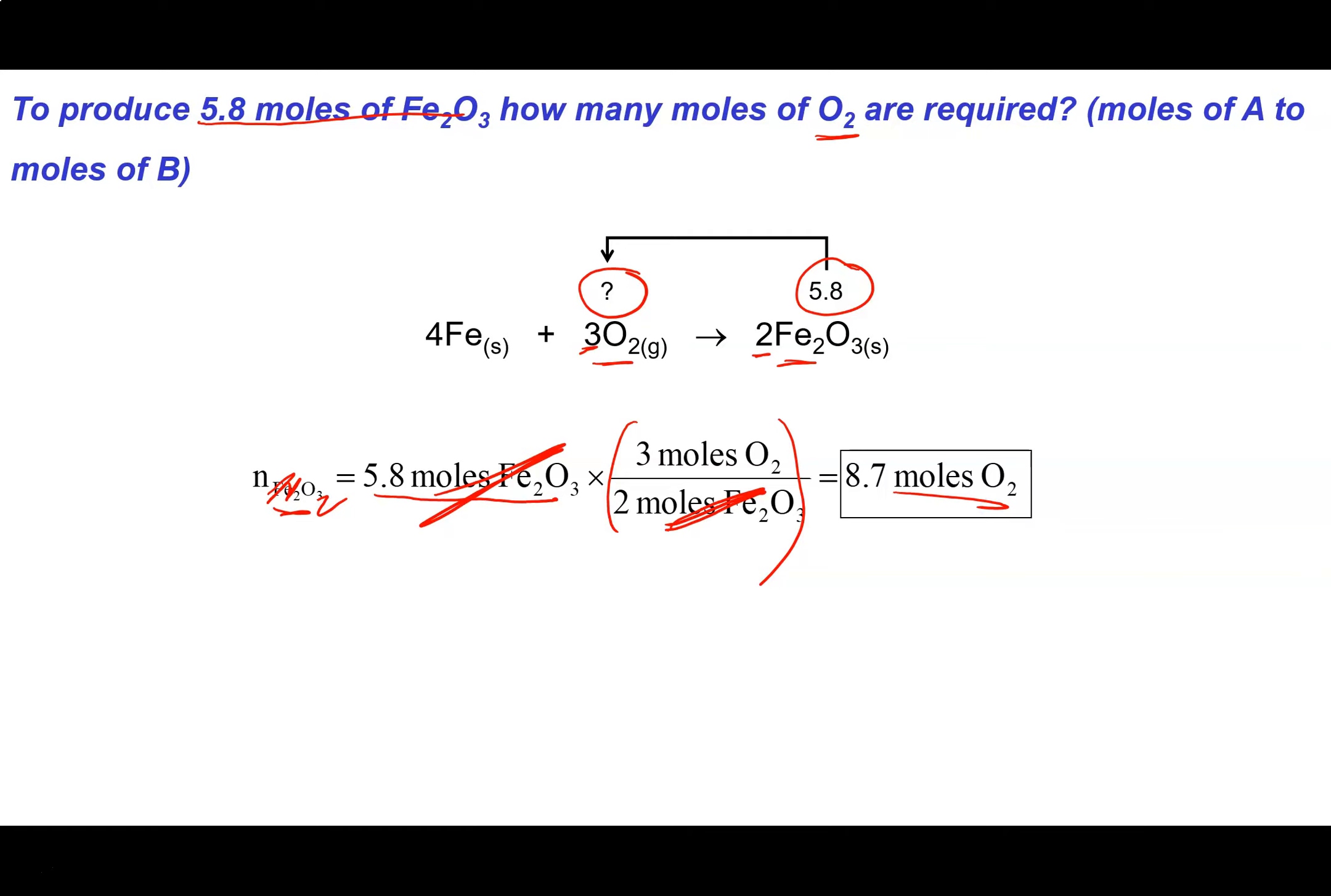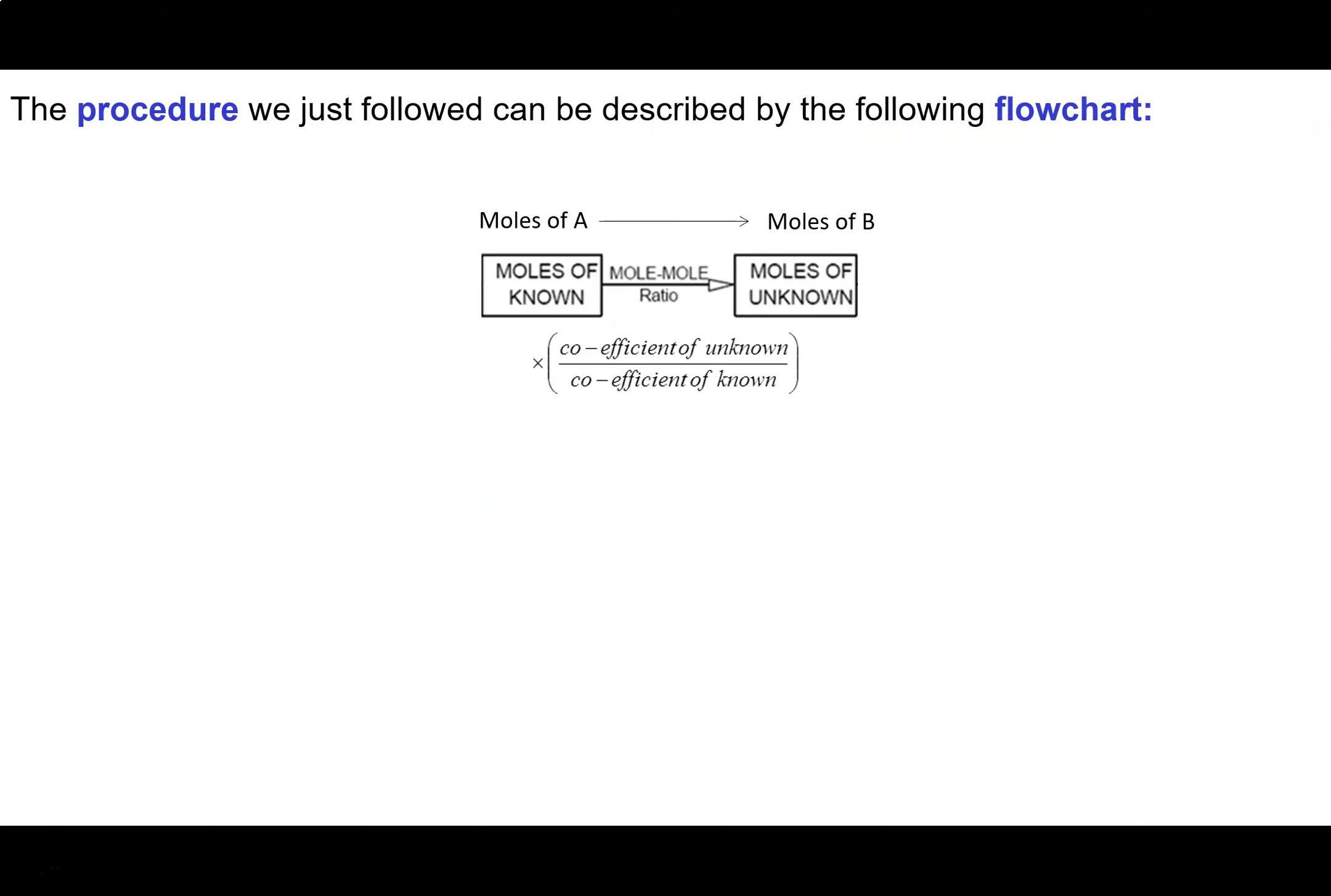So what are we doing? It's pretty simple. If we want to convert from moles of substance A to moles of substance B, then we're just going to multiply by the coefficient of B, what we call our unknown, divided by the coefficient of our A, what we call our known. And that's it really.